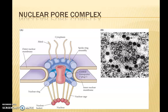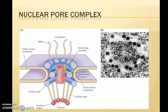The pore complex breaks the nuclear envelope's bilayer continuity. In the regions where the pores are present, the outer and inner nuclear membranes are not continuous — they break. At those points the inner and outer membranes join together, so the bilayer continuity is broken by these pores.